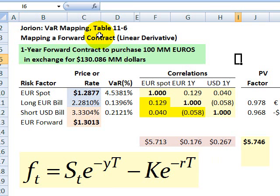I'm building on a previous screencast where we're mapping instruments, specifically a linear derivative. The instrument we used before is the same, shown here in green: a forward contract on a currency, specifically a one-year forward contract to purchase 100 million euros in exchange for 130 million US dollars approximately.